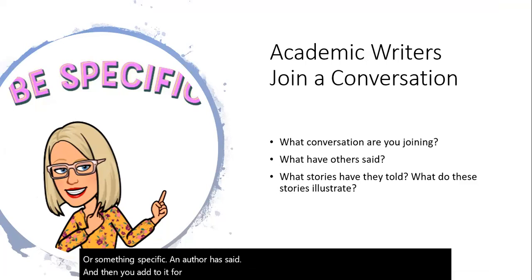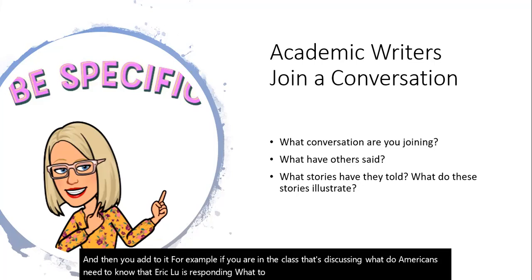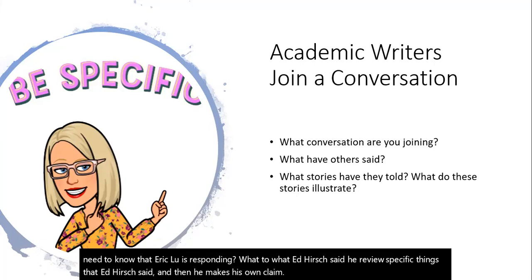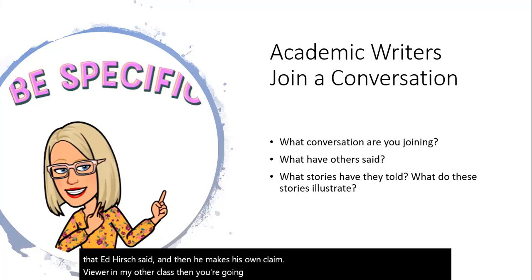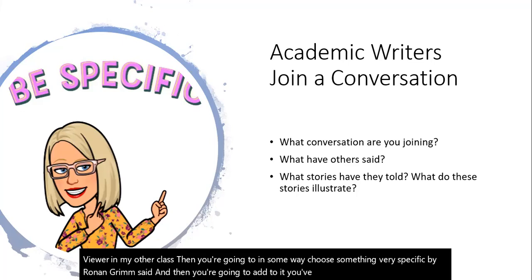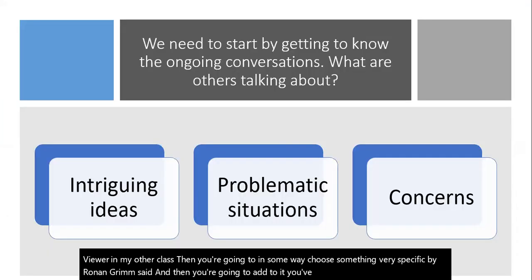For example, if you're in the class that's discussing what do Americans need to know, you know that Eric Liu is responding to what E.D. Hirsch said. He reviews specific things that E.D. Hirsch said and then he makes his own claim. If you were in my other class, then you're going to, in some way, choose something very specific that Baron and Grimm said, and then you're going to add to it. You've got to think, what specific idea do you plan on adding to?